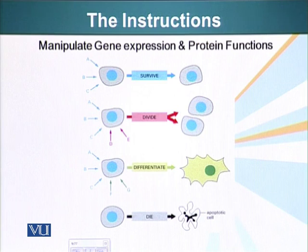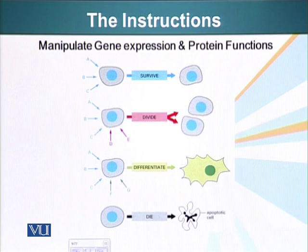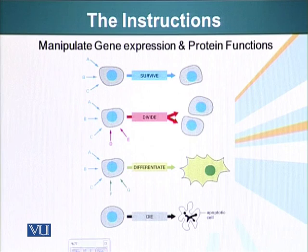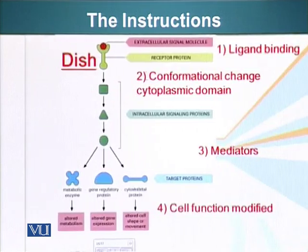Very importantly, signals can also tell cells to die. This is just as important as telling cells to live. For example, some of our cells when they start malfunctioning — becoming cancerous — or cells we no longer need, like immune cells that can attack our own body, have to be given information that they are no longer needed. So they commit suicide. Cells can receive signals to undergo suicide, or apoptosis.